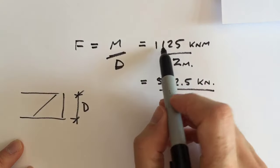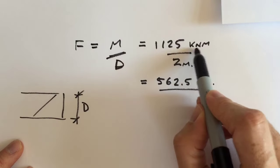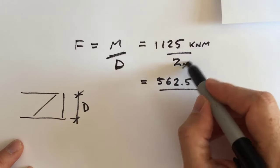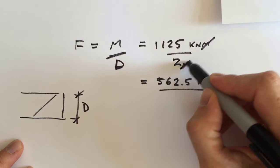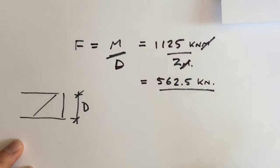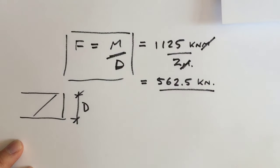And the way to remember that is, if you've got a moment with the units kilonewton metres, if you divide it by a value of metres, you end up crossing those two out, you end up with a value for kilonewtons, which is what we've got. So that is the third formula I want you to remember.